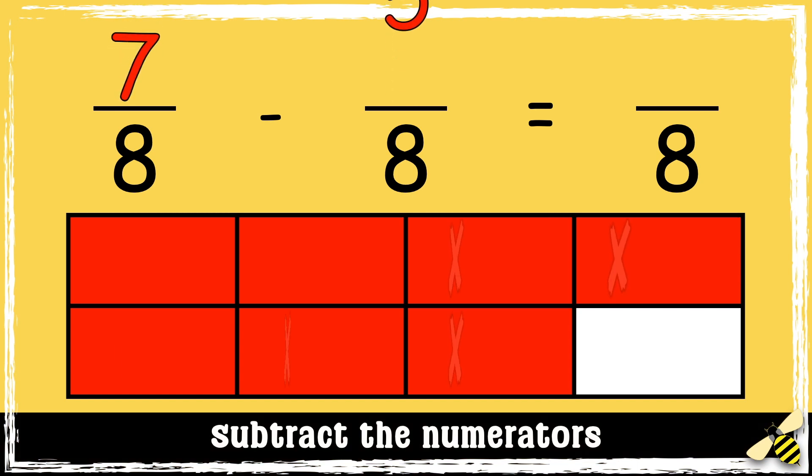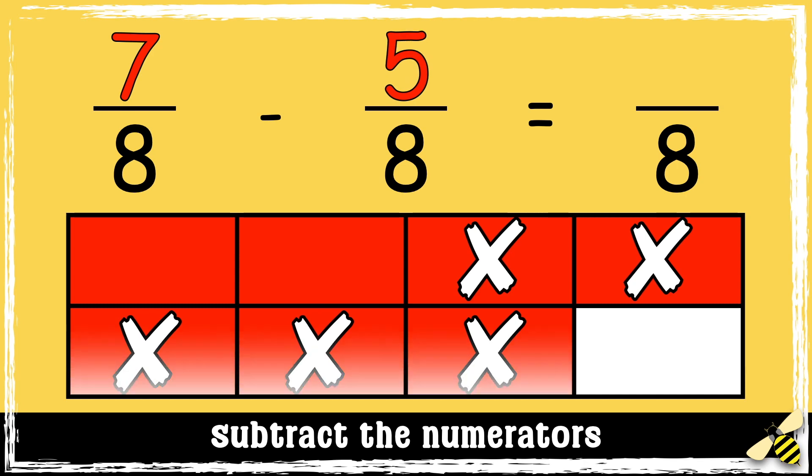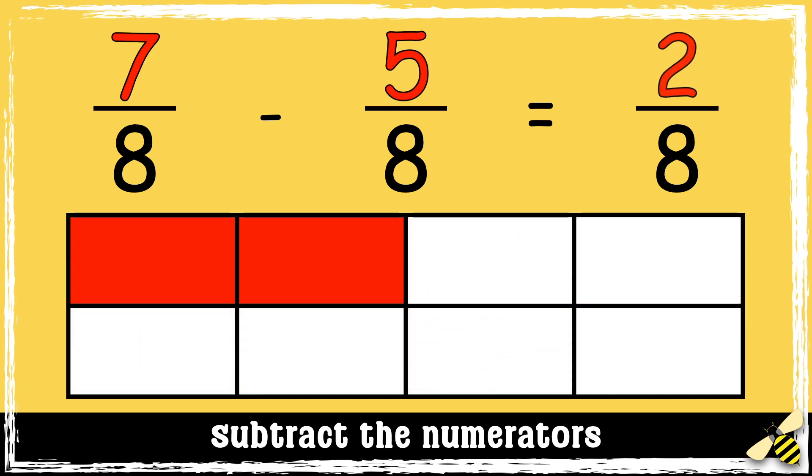So 7 take away 5 equals 2. So the answer is 2 eighths.